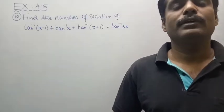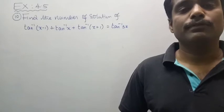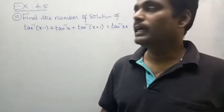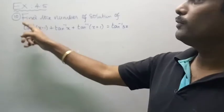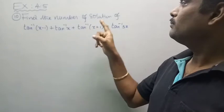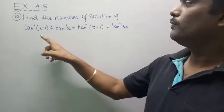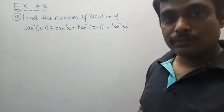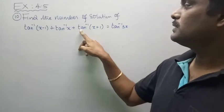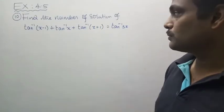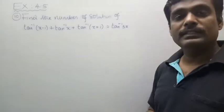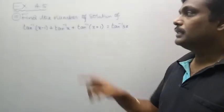Hi, my dear students. Today we will discuss Chapter 4, inverse trigonometric functions — Exercise 4.5, question number 10. Find the number of solutions of tan inverse of (x minus 1) plus tan inverse x plus tan inverse of (x plus 1), which is equal to tan inverse 3x.